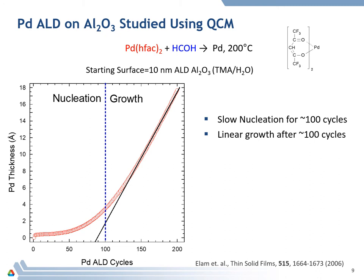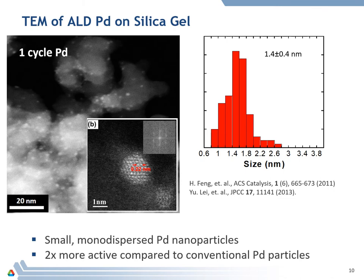Palladium atomic layer deposition can be accomplished using palladium HVAC and formaldehyde, on top of an aluminum oxide surface as the support. The thickness as a function of the number of palladium ALD cycles is not linear — it starts out very low, and then after some period of time becomes linear. We can divide the growth into a nucleation phase and then a growth phase, with the transition occurring at about 100 ALD cycles. This is because it's growing as particles, not uniform layers. A transmission electron micrograph shows these palladium nanoparticles are about one to two nanometers in size and are crystalline, with a fairly tight particle size distribution. We do palladium ALD and we end up with small monodispersed palladium nanoparticles.